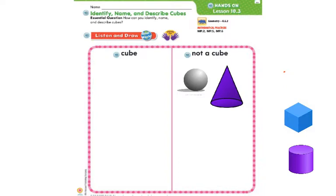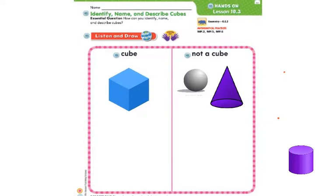The third shape right here — this is our cube. It has flat surfaces. It doesn't really have any curves. This is our cube, so I'm going to put this over on the cube side. Last but not least, the shape down at the bottom. Is this a cube? I want you to point to which box it goes in — cube or not a cube?